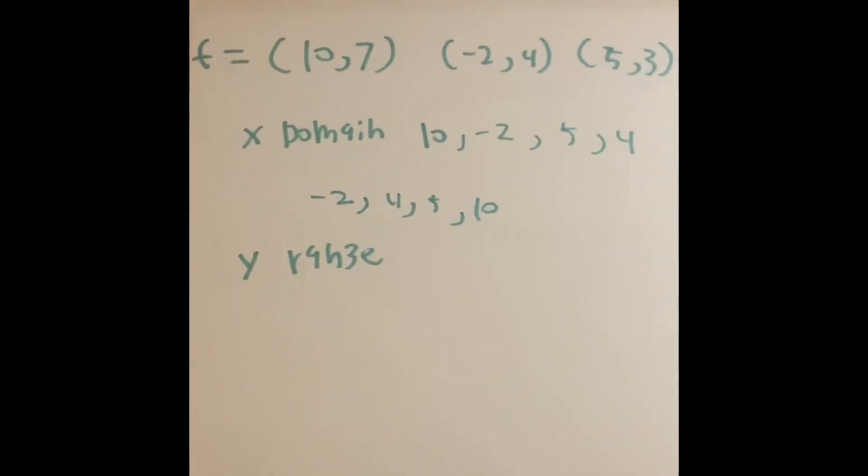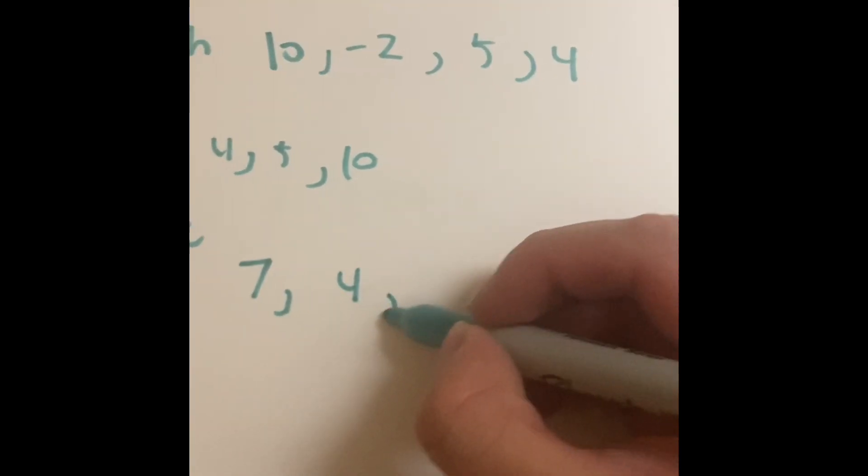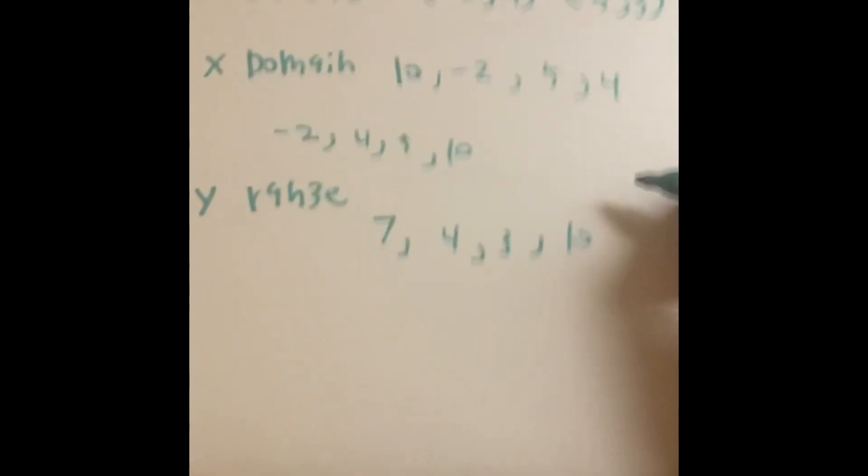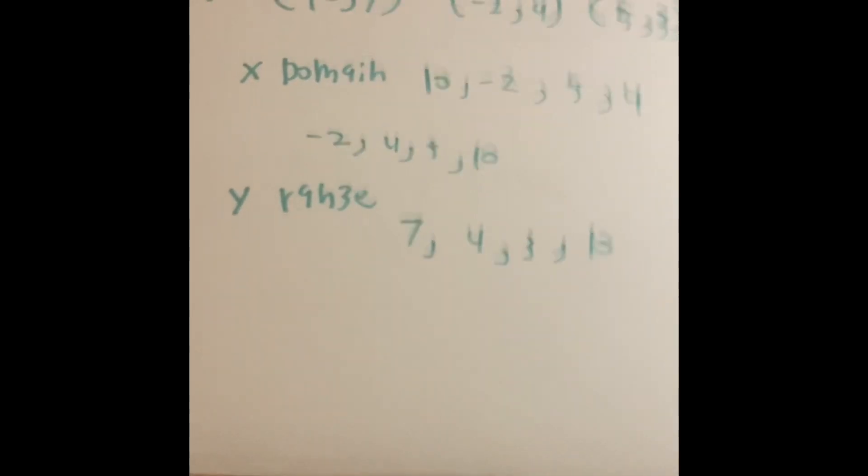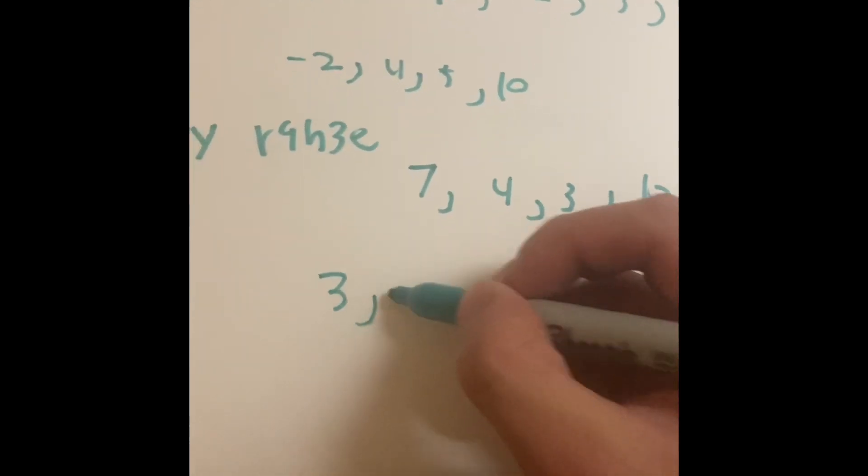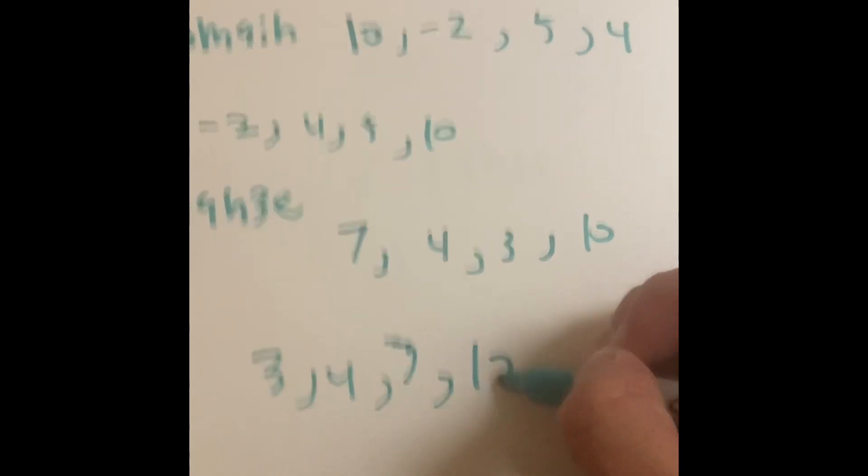For the y values, we're going to have 7, 4, 3, and 10. To understand what's happening, if your teacher wants it in a numerical order again, we're going to say 3, 4, 7, and 10. And don't forget the commas.